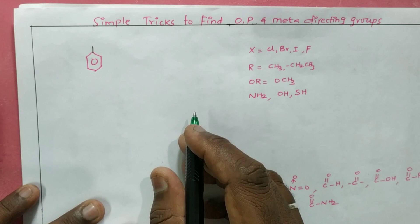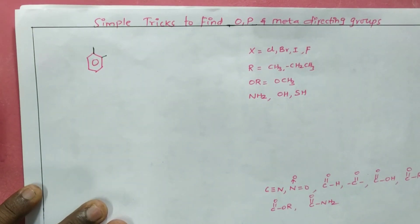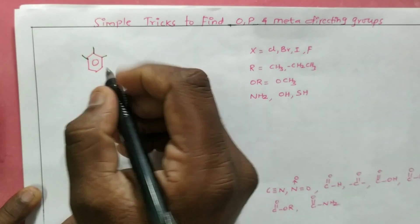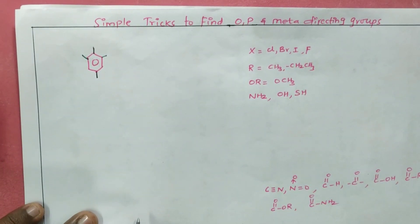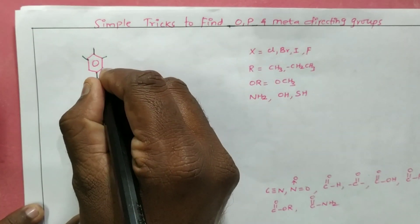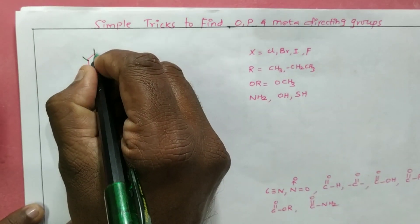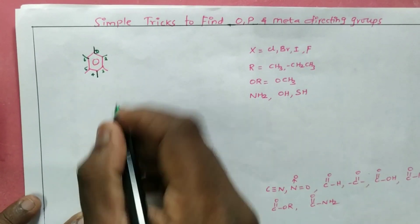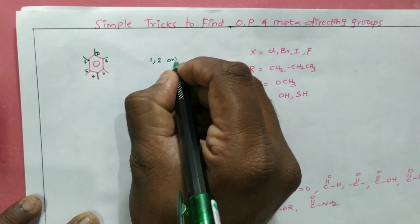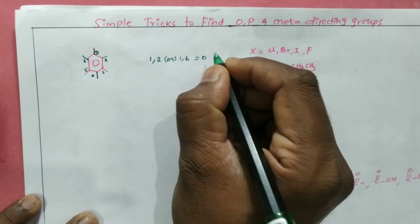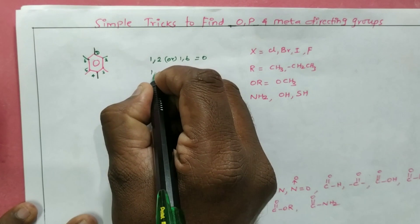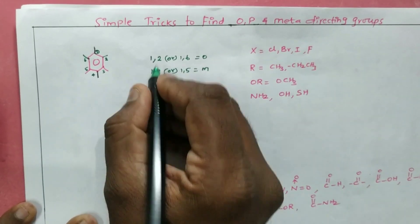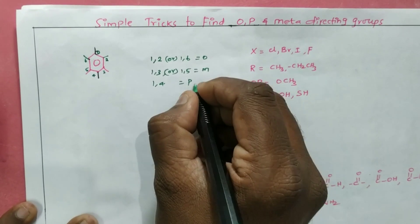When a second substituent comes and occupies another position, we need to identify where it goes. If we consider position number one, then position two and six are ortho positions; positions one-three and one-five are meta positions; and position one-four is the para position.